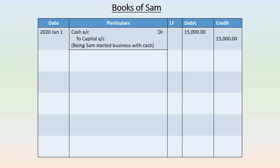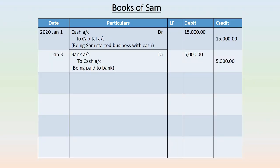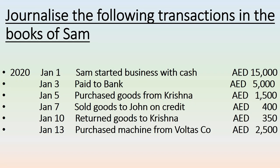Next transaction, January 3rd: paid to bank 5,000 dirhams — meaning cash deposited into the bank. The two accounts are bank account and cash account. Bank account is an artificial person, so it comes under personal account — debit the receiver — bank is the receiver and is to be debited. Cash account is an asset account, so apply real account rules: cash has gone out from the business, so it should be credited. Then write the narration.